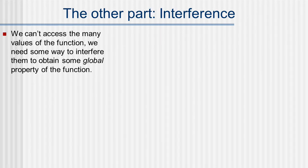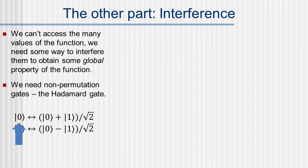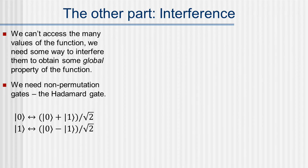But that's only part of the story — the other part is interference. If you were to measure directly you would only get one value of the function. What we aim for is some global property of the function, and to get that we need to use interference. The prototypical operation for interference is the Hadamard gate. The Hadamard gate takes 0 and turns it into a plus superposition of 0 and 1 (the root-2 factor is just for normalization). If you apply the Hadamard again you get back to the zero state. If you started with 1 you get a minus superposition: 0 minus 1. The Hadamard together with the Toffoli gate are universal for quantum computing — anything an arbitrary quantum computer can calculate you can calculate with just these two gates.